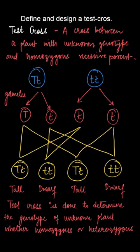Here we can see a test cross. If one parent is with the dominant phenotype but its genotype is unknown, we are assuming it to be heterozygous that is capital T small t and the other parent is a recessive parent. Therefore, its genotype will be small t small t.